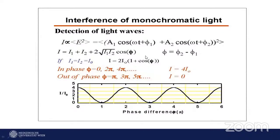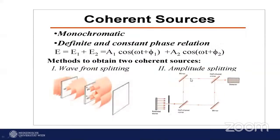Interference of monochromatic light: if two light beams interfere and are in phase, with a phase difference of zero, they produce constructive interference — the resultant amplitude is twice the original, giving four times the intensity. If they are out of phase, the intensity becomes zero — this is destructive interference. There are two methods to generate interference: wavefront splitting, similar to Young's double slit experiment, and amplitude splitting using a beam splitter.